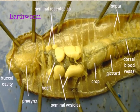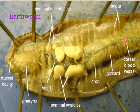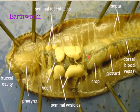On the earthworm, we have the mouth and the esophagus, moving on down into the crop, the gizzard, and then into the intestines. We have five hearts, called the aortic arches. The seminal vesicles are present, and here we can see a dorsal blood vessel.